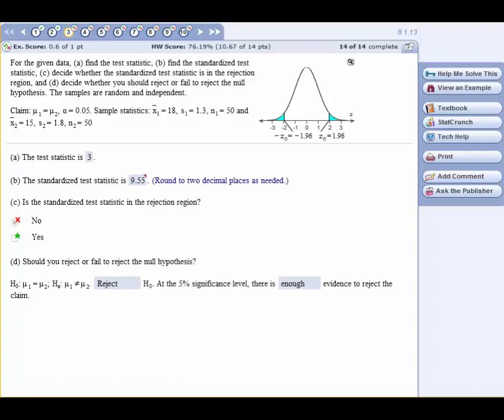All right, we're back in MyStatLab. I brought over the standardized test statistic of 9.55 after you rounded to two decimal places. The question is, is the standardized test statistic in the rejection region? Well, what is the rejection region? They gave us alpha equals 0.05.